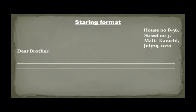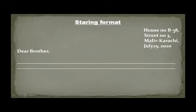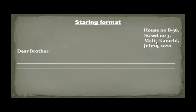In the new starting format, on the right-hand side you write your house number — for example, B-38 — and add a comma. On the next line, write the street number. There are many streets, so you must mention it — for example, street number 3. Add a comma and then write where it is located: Malir, comma, Karachi.